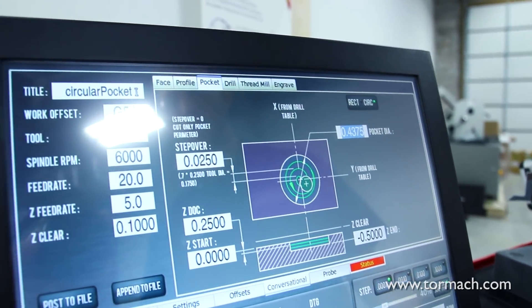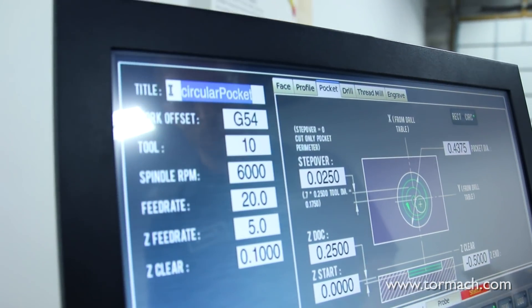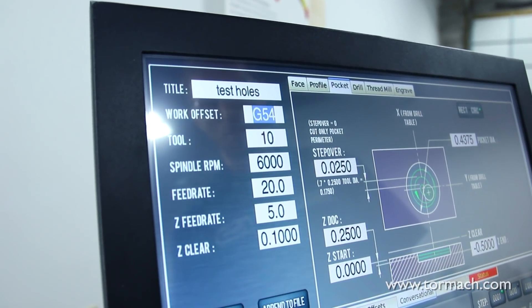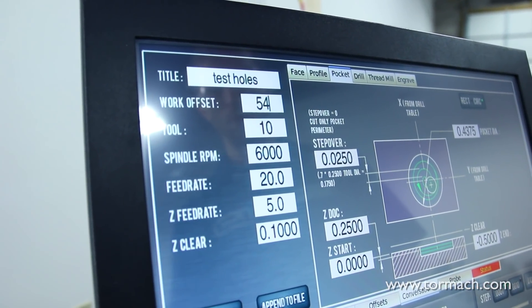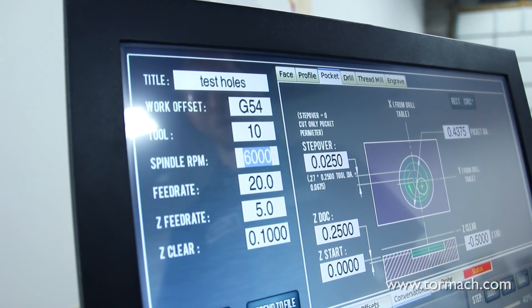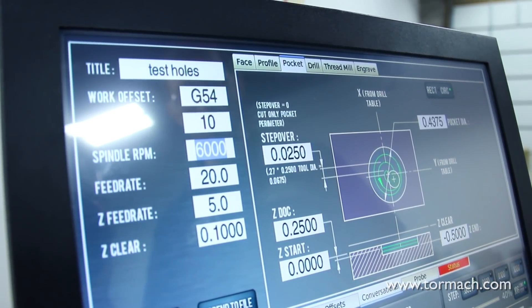From here we need to name our tool path. We're just going to call this test holes. We're going to use G54 as our work offset, so we'll press 54 and hit enter. Our tool number is 10. It's a quarter inch diameter cutter, so we'll run it at 6,000 RPM, which is a good number.